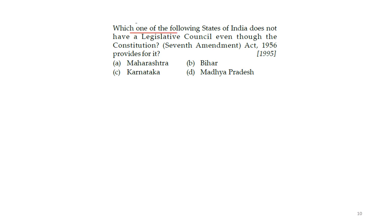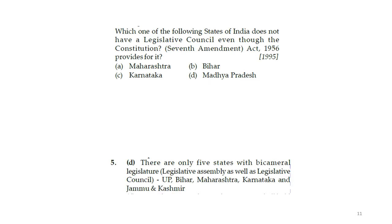Next question: which one of the following states of India does not have a legislative council even though the Constitution Seventh Amendment Act 1956 provides for it? Options: Maharashtra, Bihar, Karnataka, Madhya Pradesh. The answer is Madhya Pradesh. Maharashtra, Bihar, and Karnataka already have a legislative council. Only five states have a bicameral legislature: UP, Bihar, Maharashtra, Karnataka, and Jammu & Kashmir — but now J&K is no longer a state, so only four remain.